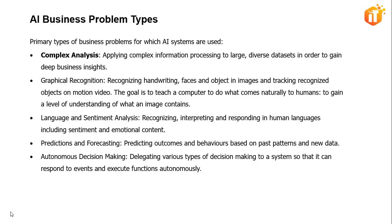There are multiple business problem types that AI is used for. We'll talk about the five primary types. The first is complex analysis — applying complex information processing to large, diverse data sets in order to gain deep business insights. The second is graphical recognition, which involves recognizing handwriting, faces, and objects in images and tracking recognized objects in motion video.